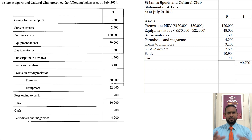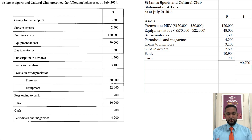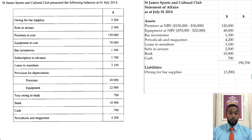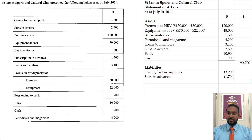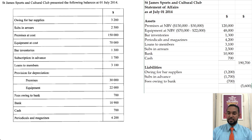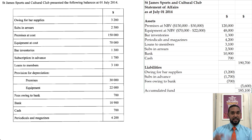Some people use a single column approach — I didn't take that here, but you can if you prefer. For the liabilities, we have owing for bar supplies, then subscriptions in advance — that's prepaid revenue — and fees owing to the bank, for a subtotal of $5,600. Therefore, our total for accumulated fund, which is the capital for non-profits, is $185,100.